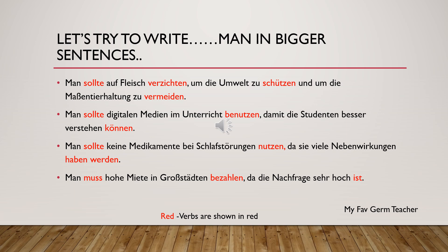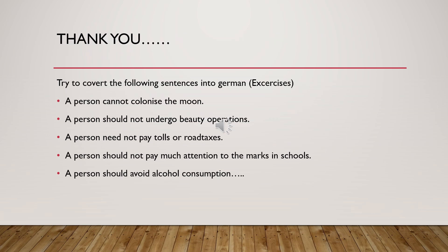Hope you have understood this section. All the verbs here are written in red. If you have any questions, write below in the comment section. Thank you very much for listening. Try to convert these English sentences into German: a person cannot colonize the moon; a person cannot undergo a beauty operation; a person should not undergo a beauty operation; a person should not pay tolls or road taxes; a person should not pay attention to marks in schools; a person should avoid alcohol consumption. These are sentences that could be used in exam preparation for writing. The answers will be added in the next slides.